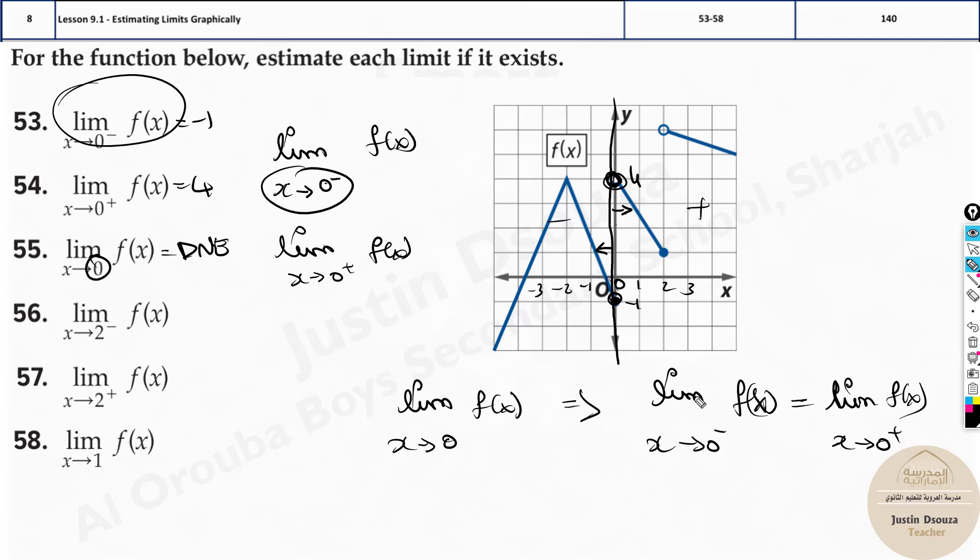This is very important. Limits on the negative and positive must be equal, only then this exists. Otherwise, if it does not exist, this is DNE. I mean, if they're not equal, they're DNE. So that's the thing.